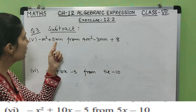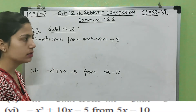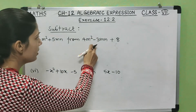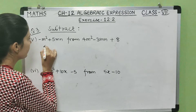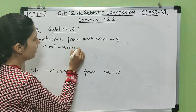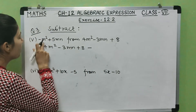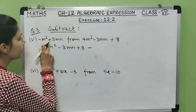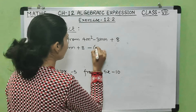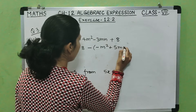Now the fifth part: subtract minus m² plus 5mn from 4m² minus 3mn plus 8. We write the second expression first: 4m² minus 3mn plus 8, then minus. Since the first term of the expression to subtract is negative, we put the whole expression in brackets: minus (minus m² plus 5mn).